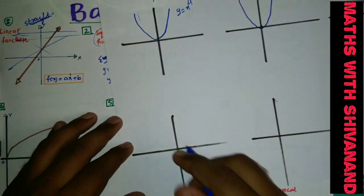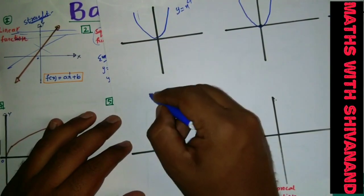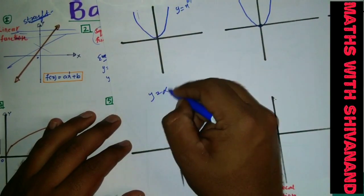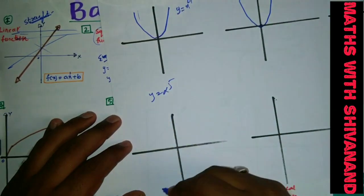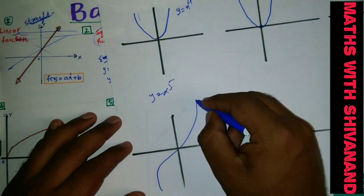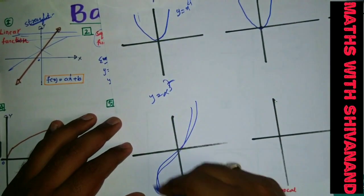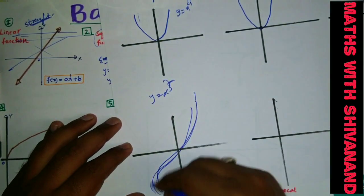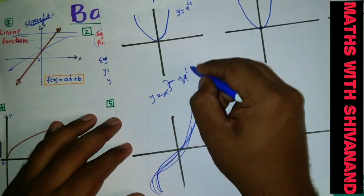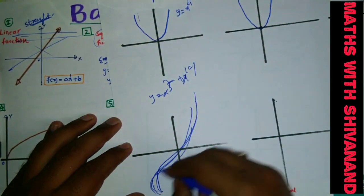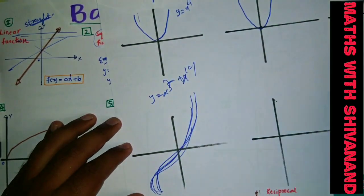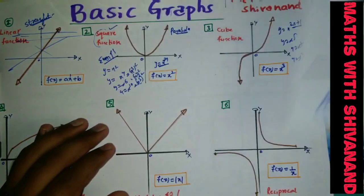Whenever somebody tells you to draw y = x⁵, it is definitely of this s-curve kind. x⁷ — same category. x⁹ — same. Even x¹⁰¹ — definitely of this category only.